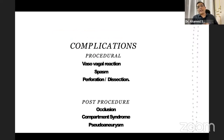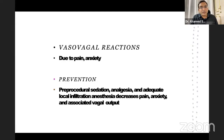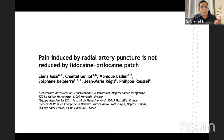Complications during the procedure include vasovagal reactions, which can occur during post-procedure compression, as well as spasm, perforation, and dissection. Post-procedure complications include occlusion, compartment syndrome, and pseudoaneurysm. Vasovagal reactions are due to pain and anxiety. Prevention includes pre-procedural sedation, analgesia, and adequate local infiltration of anesthesia, which decreases pain, anxiety, and associated vagal output.